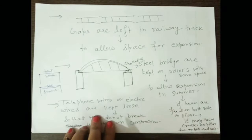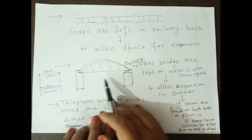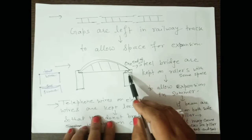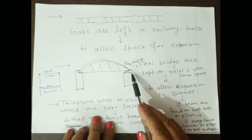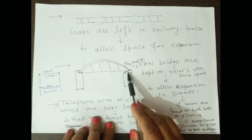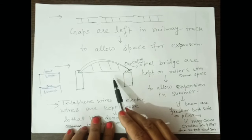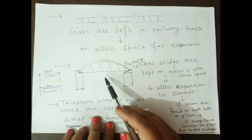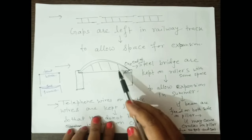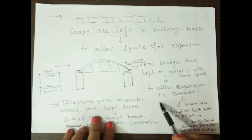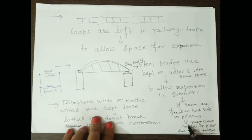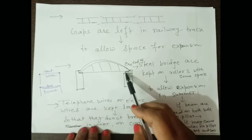The next example is a steel bridge. One end of a steel bridge is kept on rollers with some space. This space allows for expansion in the summer season when temperature is very high. Since the bridge is made of steel — a metal — it expands in summer. If the beams were fixed on both sides of the pillar without this gap, it may cause cracks in the pillar due to expansion and contraction.